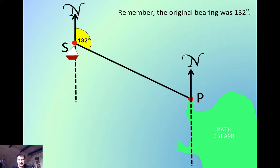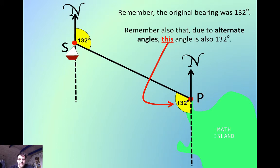Now think again about the fact the original bearing was 132 and think about alternate angles that I talked about at the start. The two north lines are parallel to each other, and the line between the ship and the port is your third line crossing those two parallel lines. In other words, you've got the Z-shape.